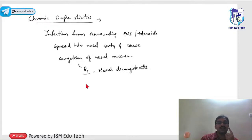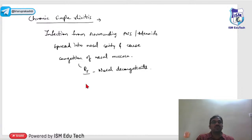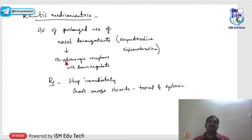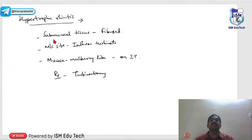Rhinitis medicamentosa is due to prolonged use of nasal decongestants like Otrivin, oxymetazoline, or xylometazoline — these cause downregulation of alpha-adrenergic receptors. Treatment is to stop the decongestant immediately and give a short course of both topical inhalation steroids and systemic steroids. Hypertrophic rhinitis involves inferior turbinate hypertrophy; the mucosa appears mulberry-like with submucosal fibrosis of sinusoids. Treatment is turbinoplasty or turbinectomy.